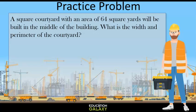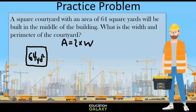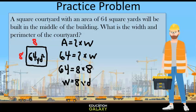Now let's try this practice problem. A square courtyard with an area of 64 square yards will be built in the middle of a building. What is the width and perimeter of the courtyard? First let's draw a picture. I know area is length times width. I don't know what the length and width are but I know it multiplies to give us 64. Since we have a square our length and width must be the same number. So what number times itself is 64? That would be 8 times 8. 8 times 8 is 64 so our width is 8 yards.